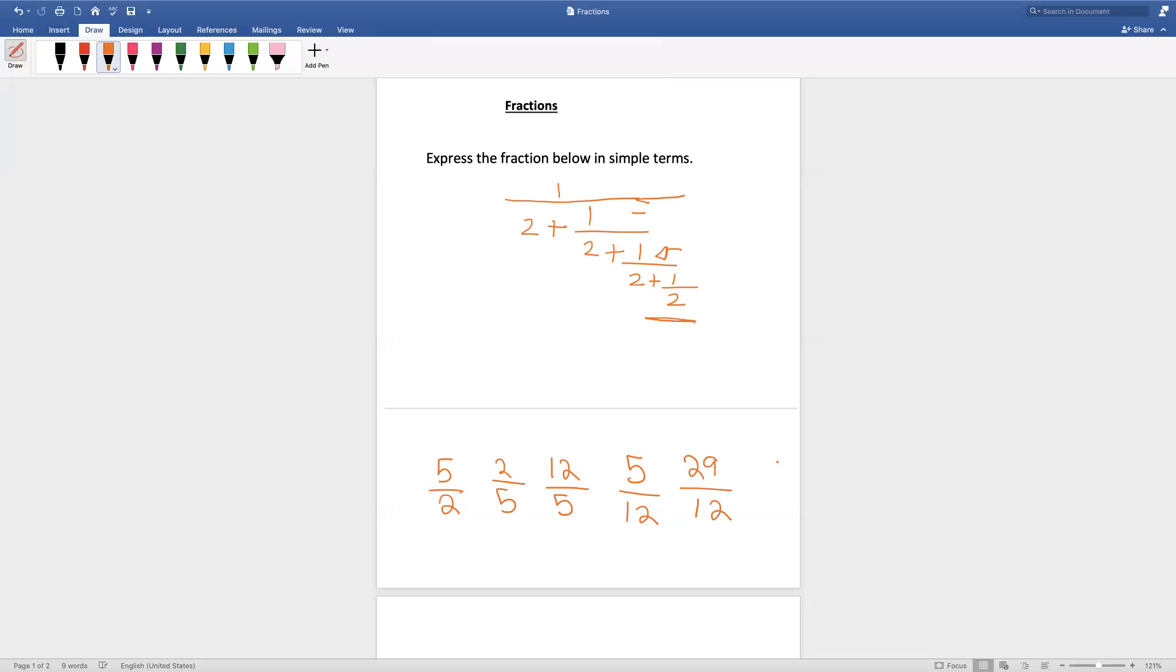And now we have to take the reciprocal of 29 by 12, which is equal to 12 by 29. That is our answer.